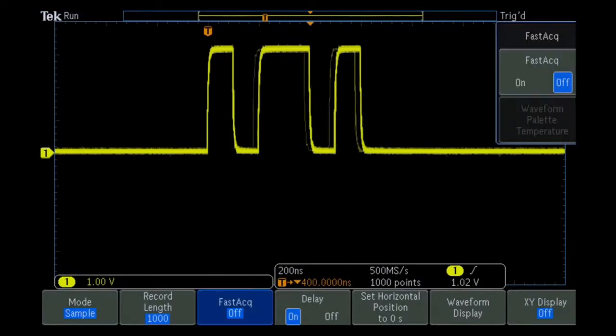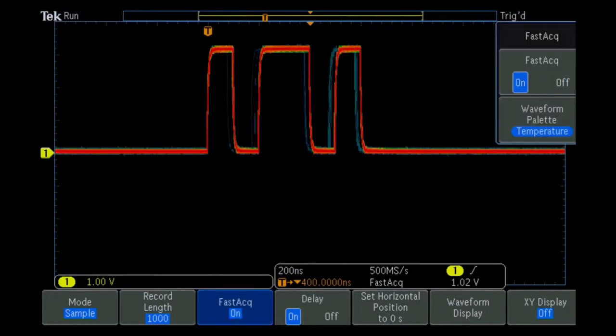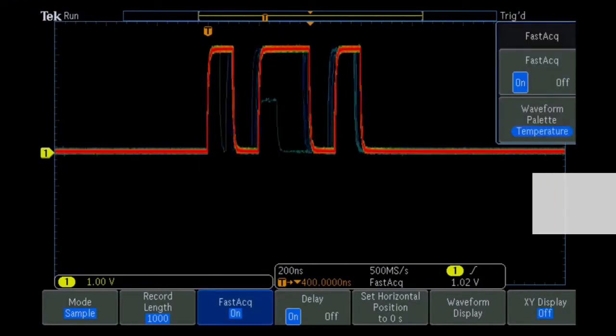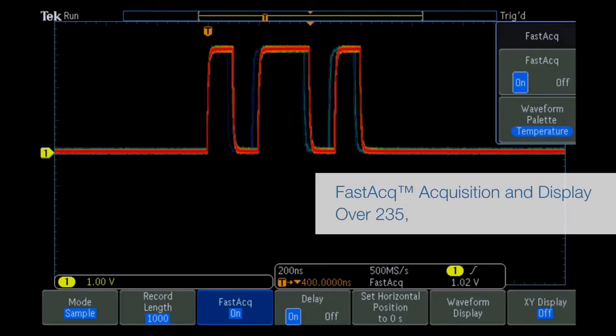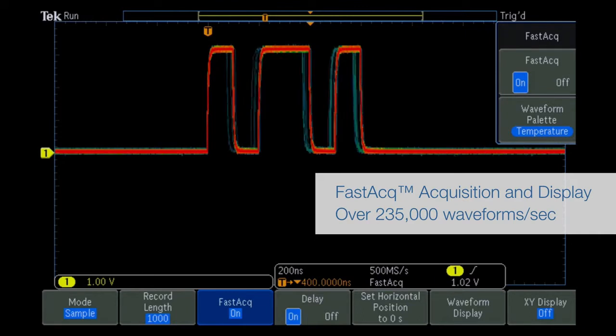To investigate further, we turn on Fast ACK mode to speed up the acquisition of waveforms and quickly capture and display the anomalies. In this 3.3 volt digital signal, we can see occasional runt pulses, a little over 1 volt high.